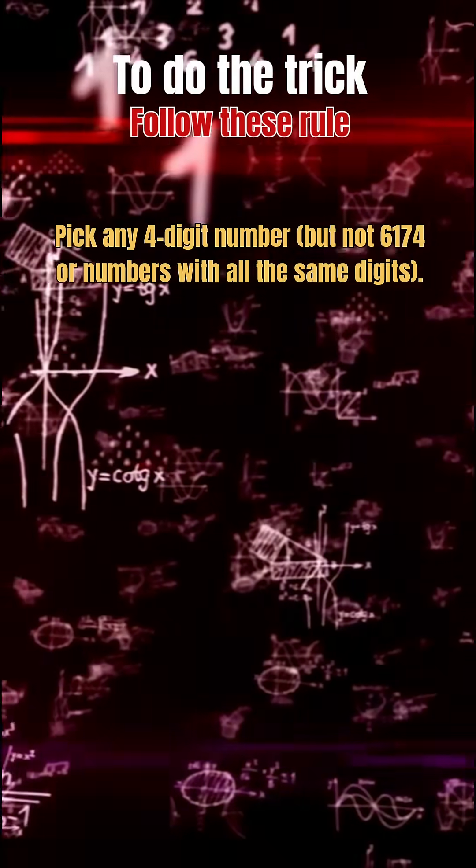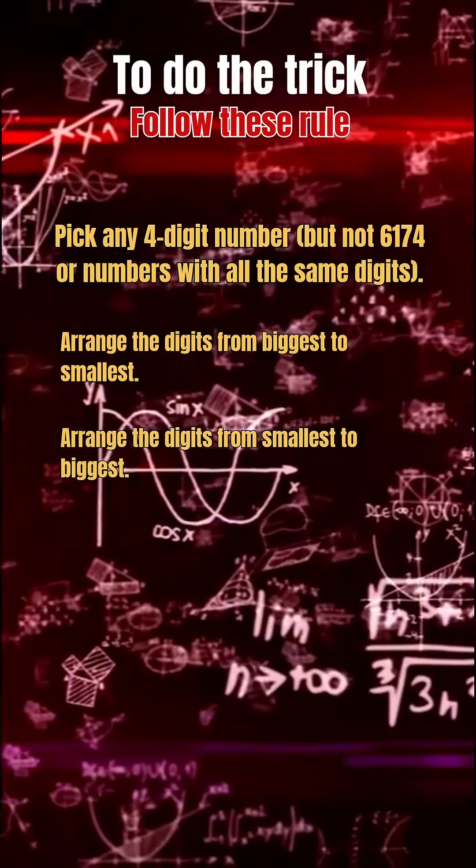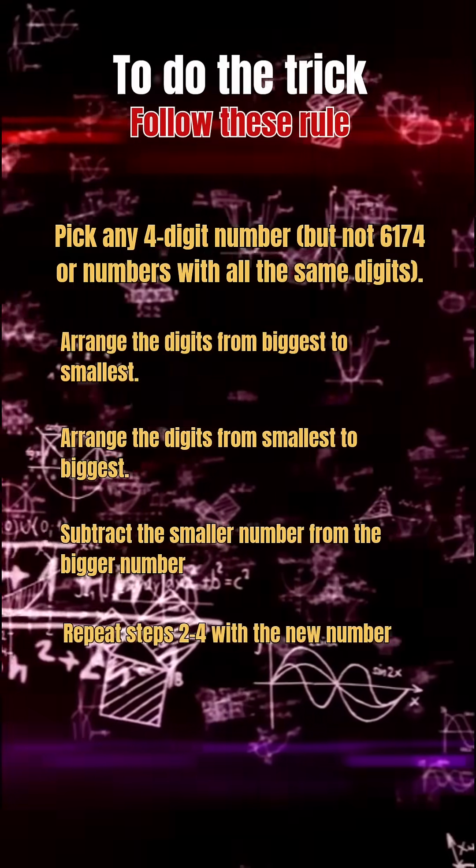Pick any 4 digit number, but not 6174 or numbers with all the same digits. Arrange the digits from biggest to smallest. Arrange the digits from smallest to biggest. Subtract the smaller number from the bigger number. Repeat steps 2 to 4 with the new number.